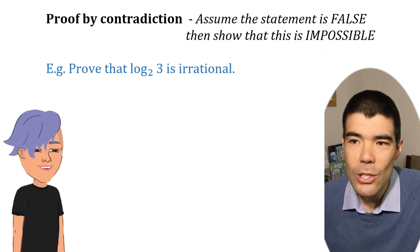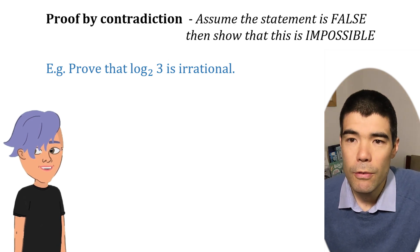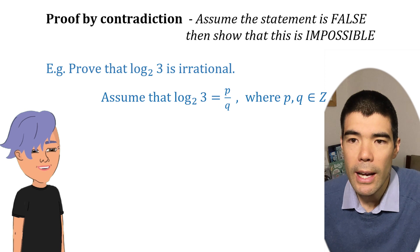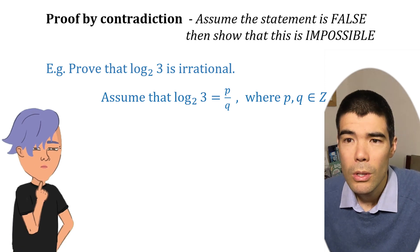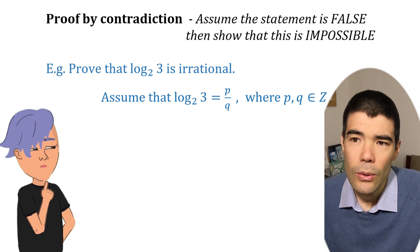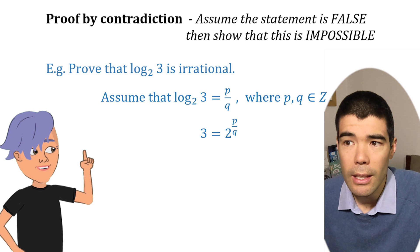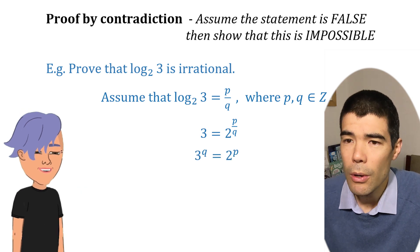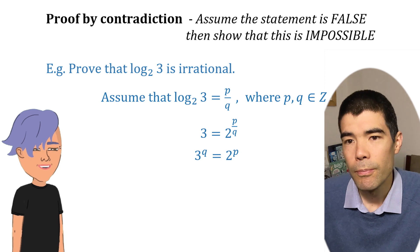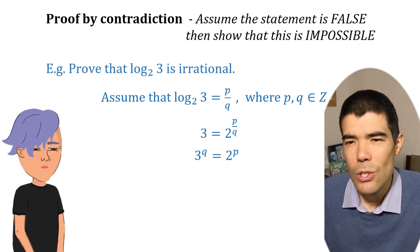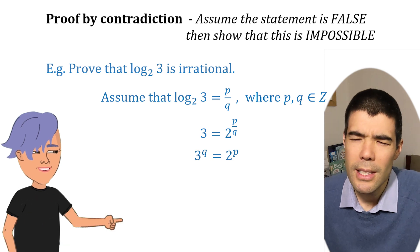This is a proof that's easiest to do by contradiction. So, assume that the log base two of three is rational. So we can write it as p divided by q for some integers p and q. Well, what would that mean? We could rewrite the equation in index form, like this. And then even move this power of q over to get two to the power of p is equal to three to the power of q. So, what? So, there's something not quite right about that. In fact, it's impossible.